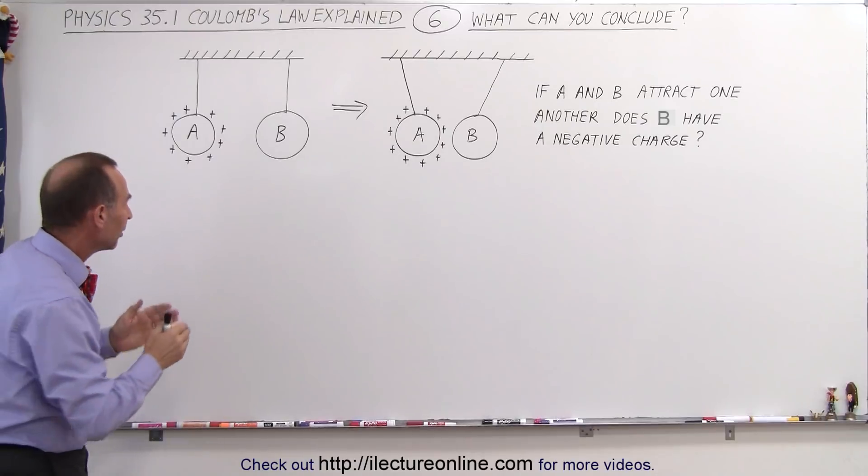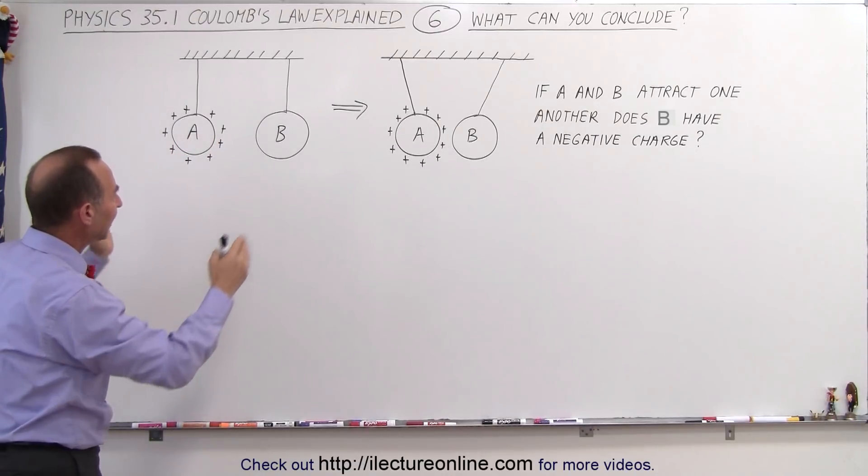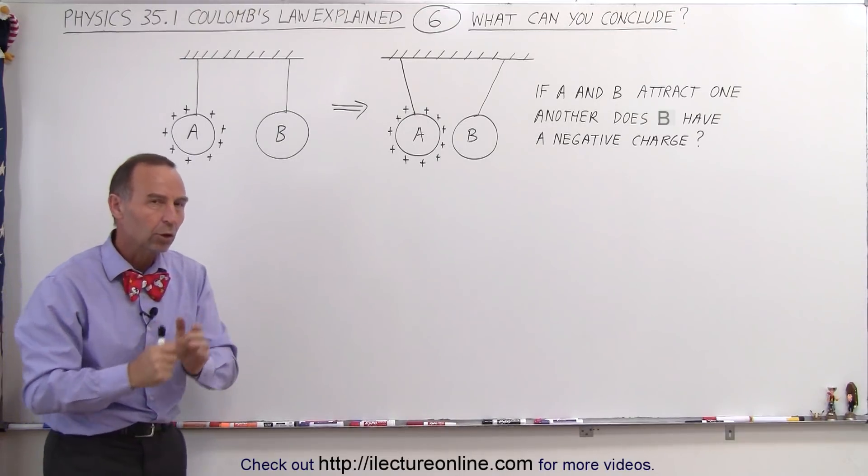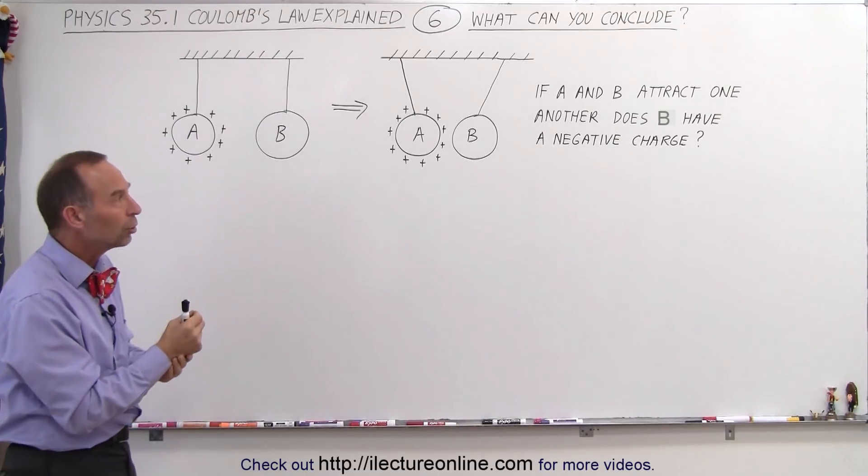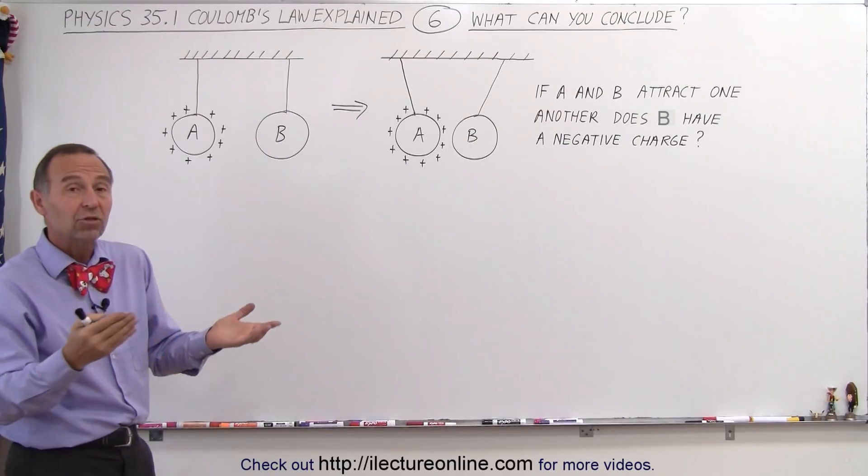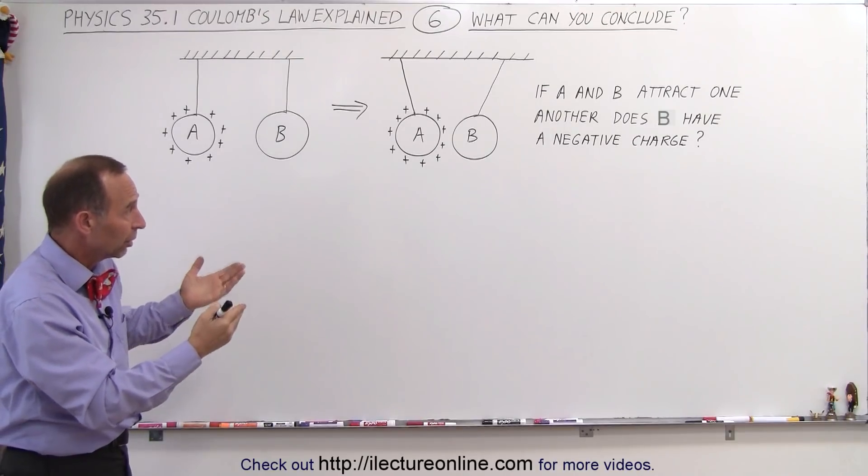and we placed a little bit of excess charge on A, some positive charge on A, and then you see the two spheres attracting one another, coming closer. Can you conclude that B must be negatively charged because we know that opposite charges attract one another and like charges repel one another?